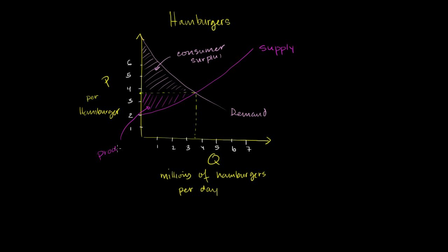These numbers are quasi-realistic. I have 3.5 million hamburgers per day — I actually looked it up before this video. It looks like McDonald's sells a little bit over 4 million hamburgers per day in the United States. We're just talking about the total market for hamburgers in a country, making the simplifying assumption that all hamburgers are created equal.